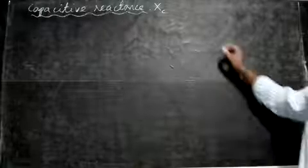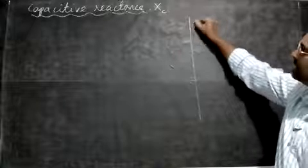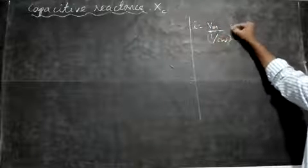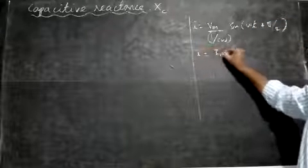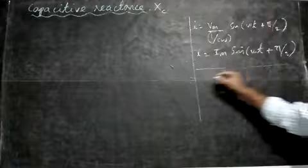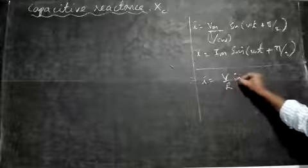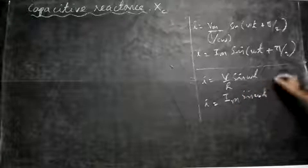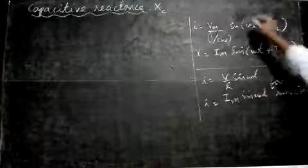Let us now study capacitive reactance. We previously derived that the current for a capacitor circuit is I = (Vm / (1/Cω)) · sin(ωt + π/2), which gives I = Im · sin(ωt + π/2). For a resistor circuit, we got I = (V/R) · sin(ωt), giving I = Im · sin(ωt). The top equation is for a capacitor circuit and the bottom is for a resistor circuit.